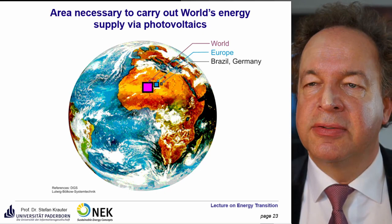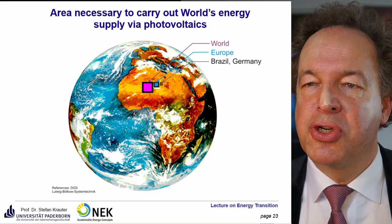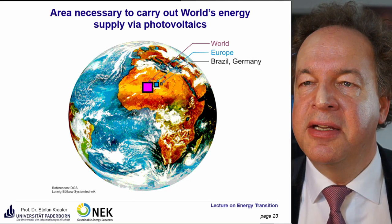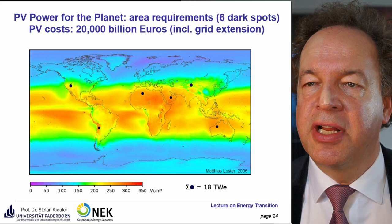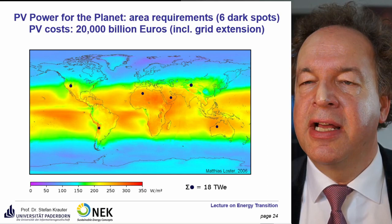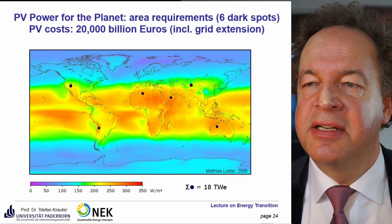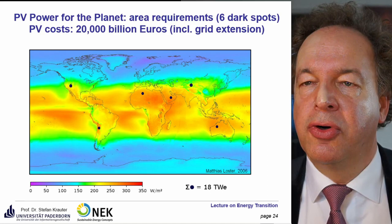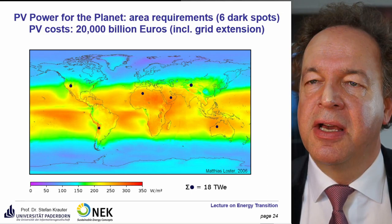Using photovoltaics at a moderate 10% efficiency to power the whole world, we would need only a small share of the Sahara Desert. On a global scale, distributed power plants totaling about 18 terawatt of installed power would be needed, at a cost of less than 20,000 billion euros — comparable to what has been spent on wars over oil.